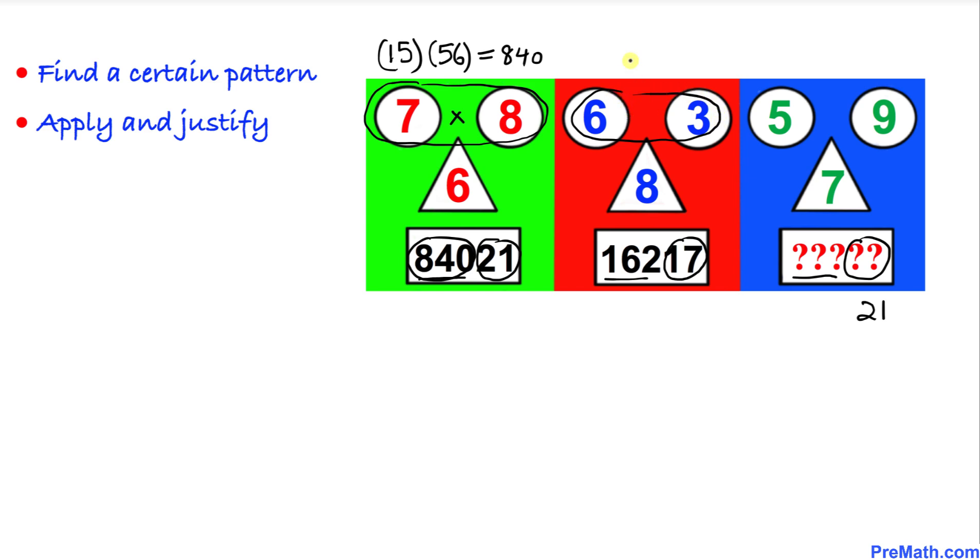First, we are going to add them: 6 plus 3 gives us 9. Then we are going to multiply these numbers: 6 times 3 is 18. So if we multiply these, that is going to give us 162. That's 162, that's what we got.